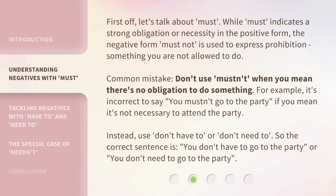First off, let's talk about must. While must indicates a strong obligation or necessity in the positive form, the negative form — must not — is used to express prohibition: something you are not allowed to do.